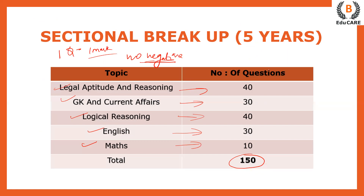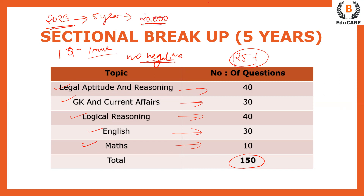Top colleges में जाने के लिए 150 में से minimum 125+ score रखना चाहिए। 2023 के data के अनुसार, 5-year program के लिए 20,000+ students ने appear किया था और 1000+ students का score पहले से 100 के ऊपर था, और उन्हें top colleges में allotment हुई। 5 years के लिए दूसरी law entrance exams भी होती हैं जैसे CLAT, AILET आदि।